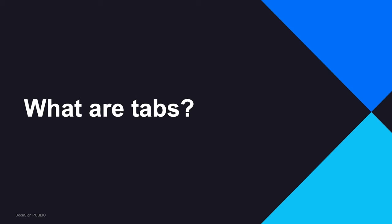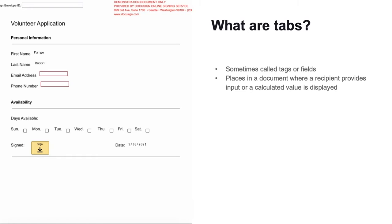So what are tabs? Sometimes we call tabs tags or fields — it can get a little confusing — but when we're talking about the API, we are usually using the terminology of tabs. Tabs are places in a document where a recipient provides input or a calculated value is displayed. On this demonstration document we have different tab types: the sign here tab, date sign tab, checkbox tabs, text tabs, and name tabs.